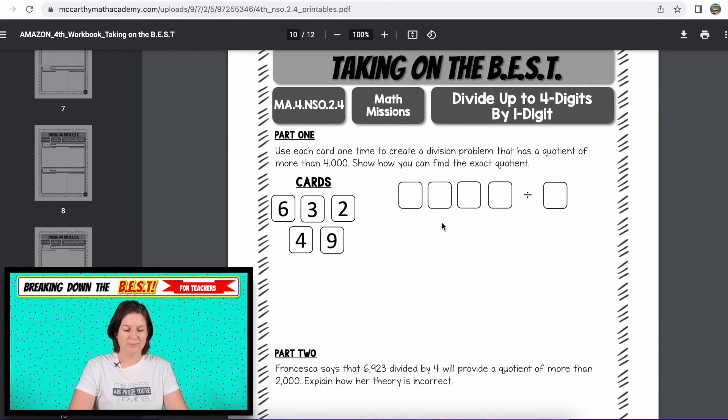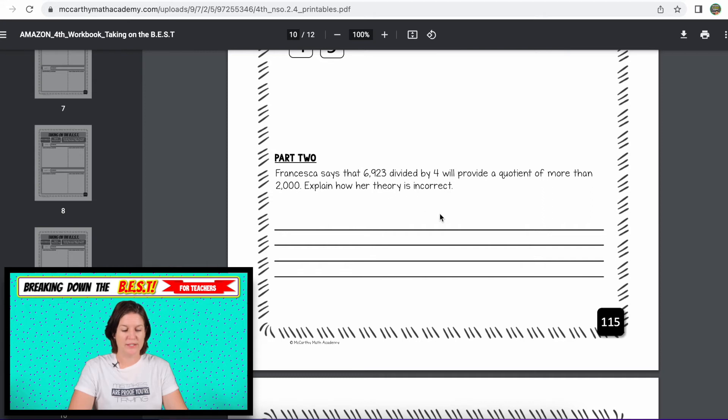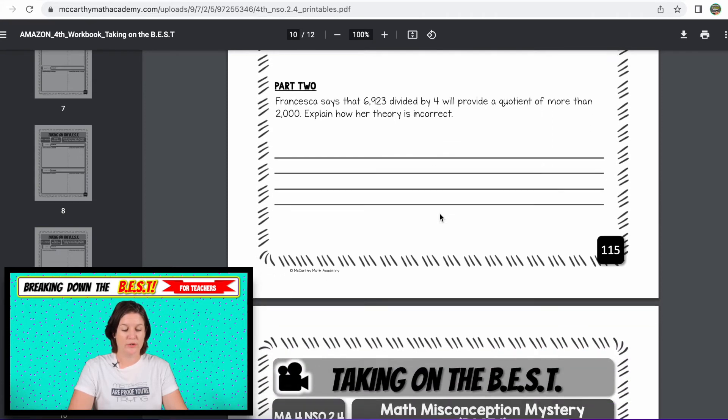Then we have a math mission, says use each card one time to create a division problem that has a quotient of more than 4,000. Show how you can find the exact quotient. So not only do they have to put the cards in there, they have to show that it does get to a quotient of more than 4,000. They would read this and explain whether that person's theory is incorrect and why it's incorrect.